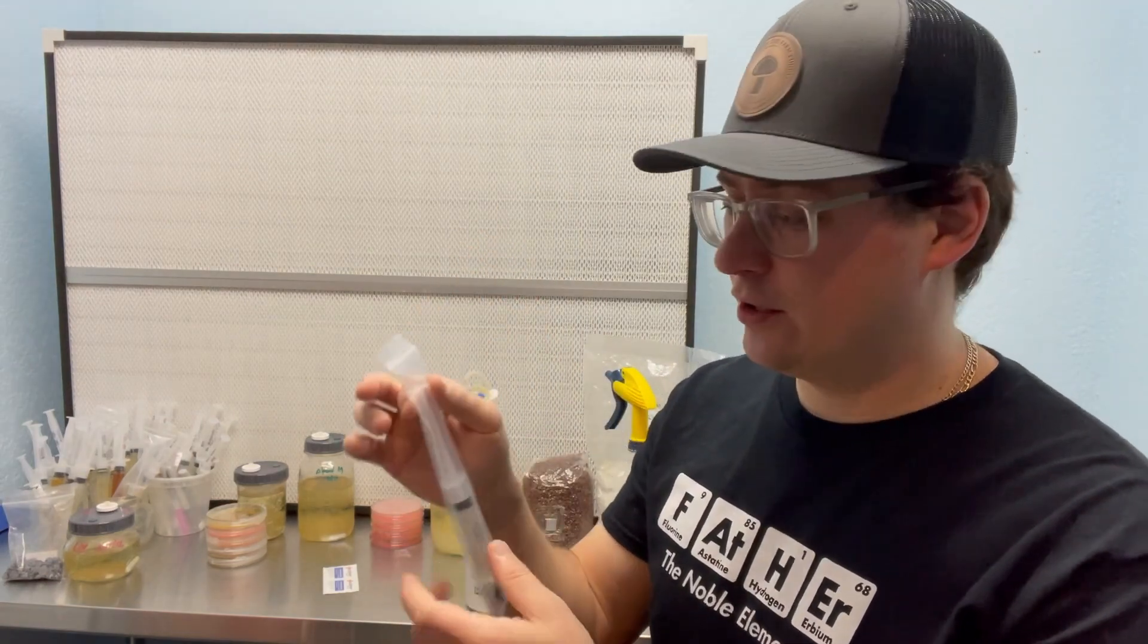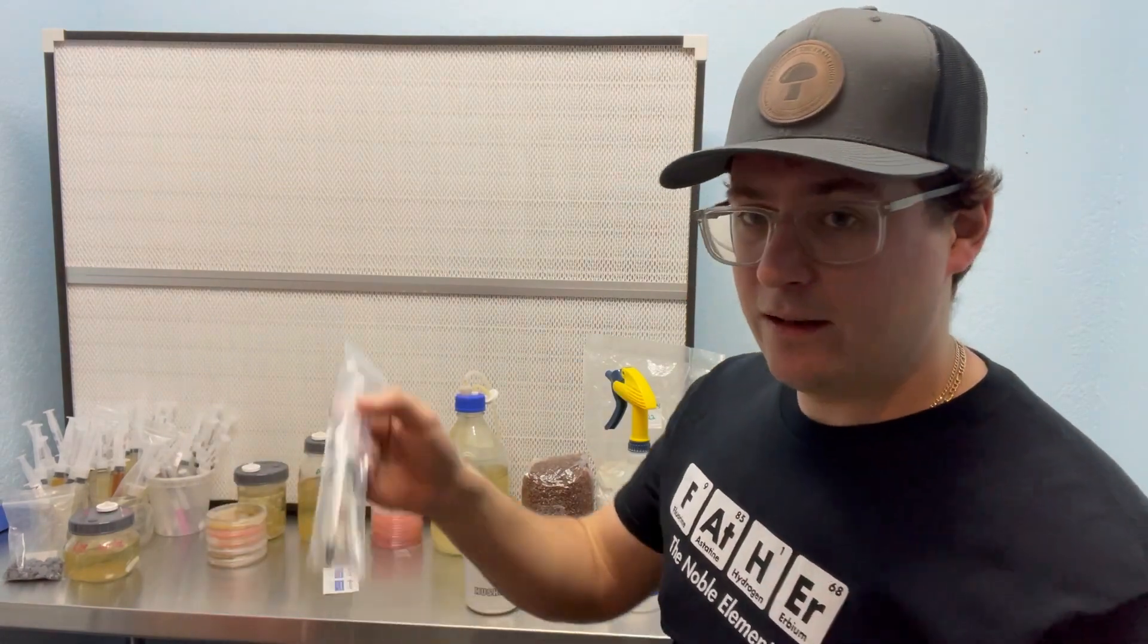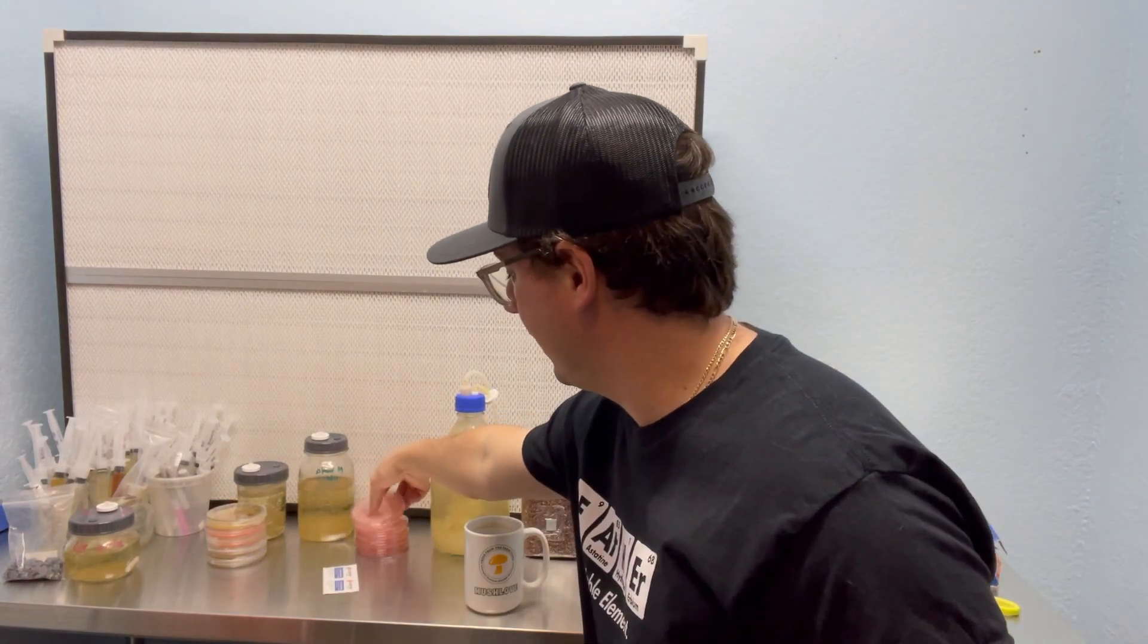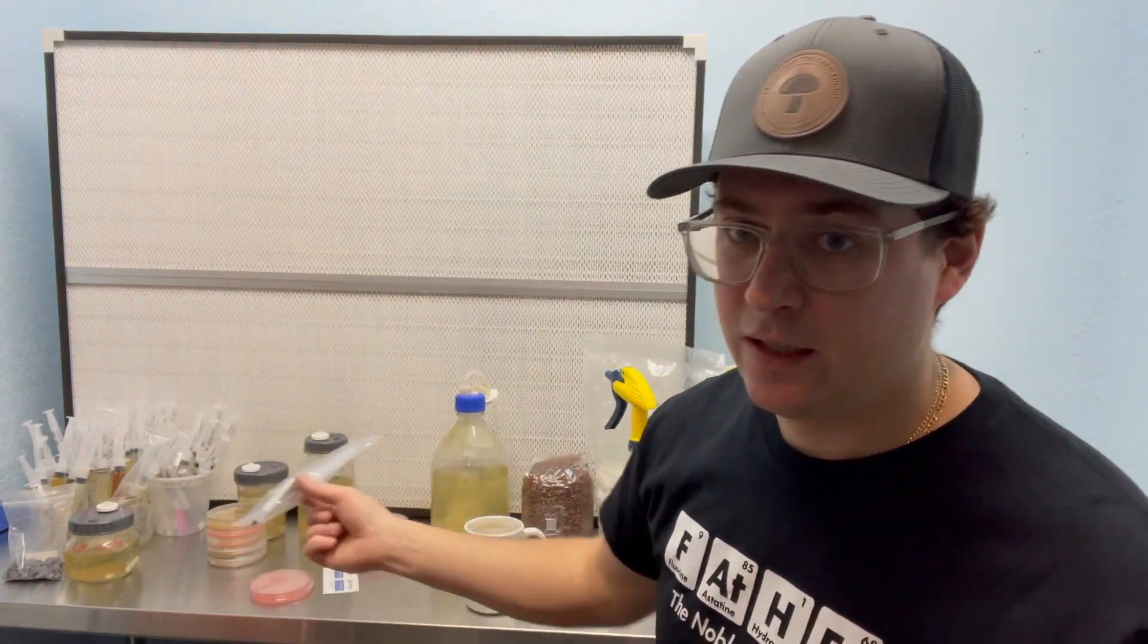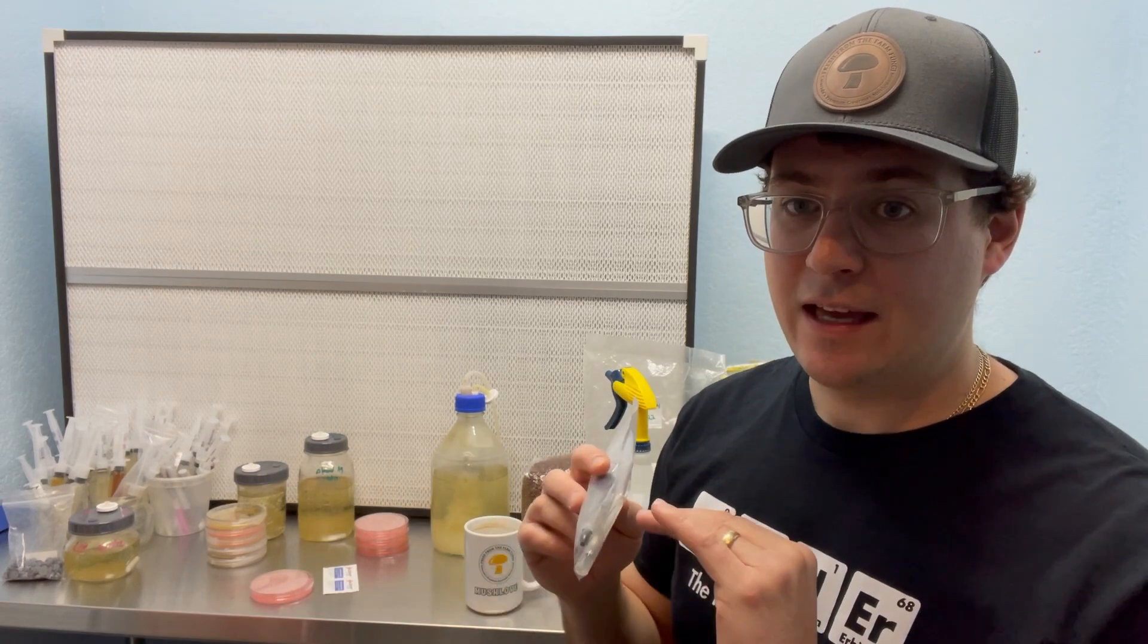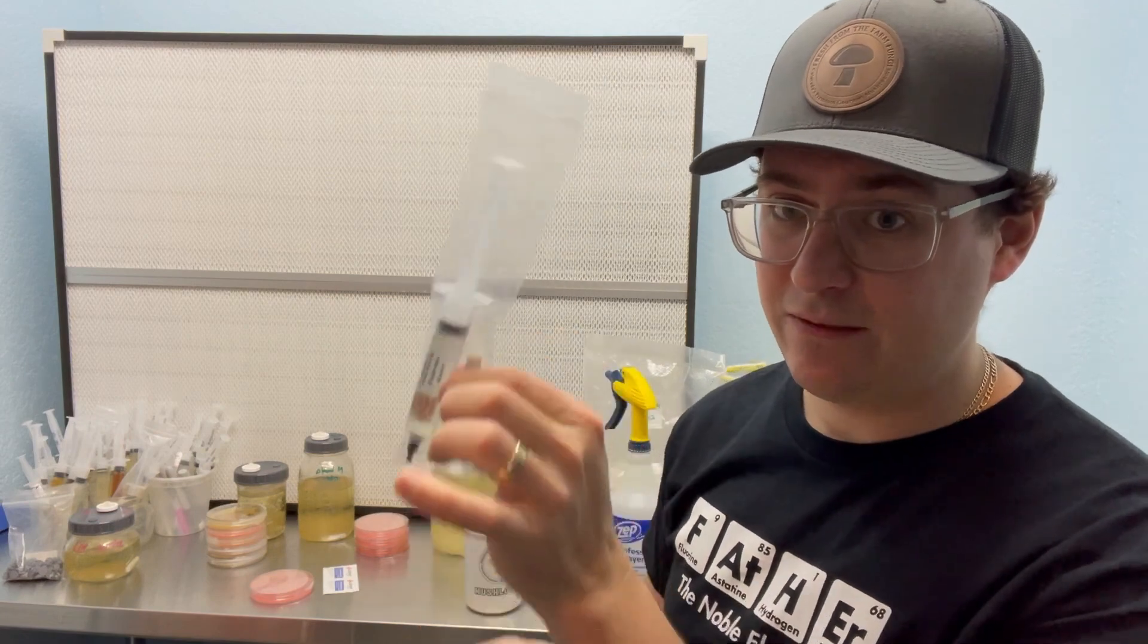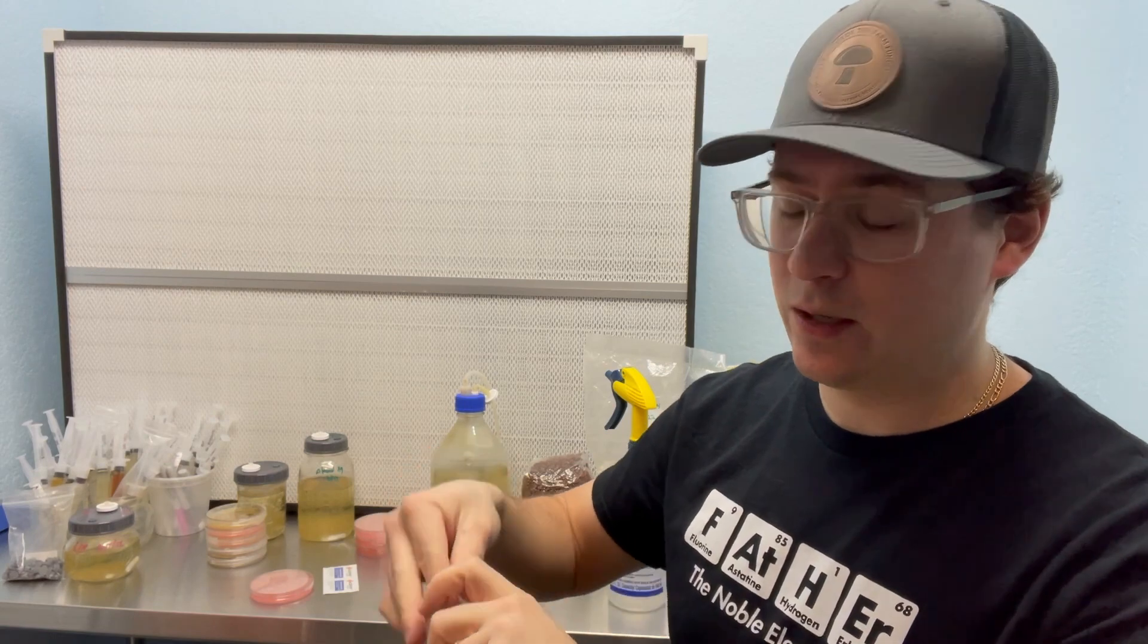When you have your liquid culture and your workstation is set up, you can either inoculate a petri dish, which is a growing medium for mushrooms. So this is a malt extract agar petri dish. And you can put a couple drops on the petri dish while making sure that you don't touch that needle. So that's the most important part receiving and using this liquid culture is to not touch the sterile needle. So I'll show you how to do that really quickly.